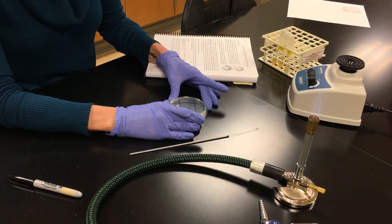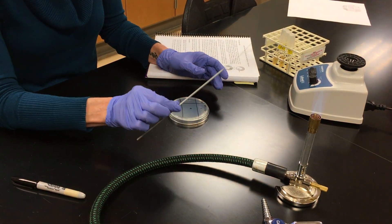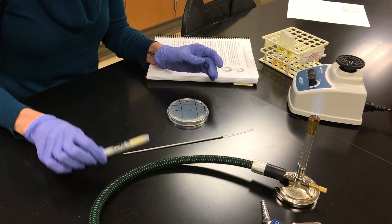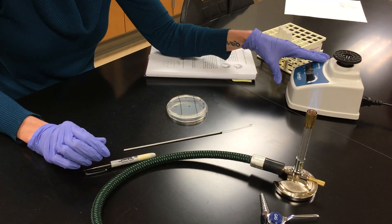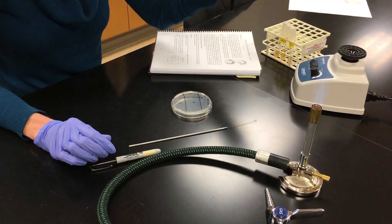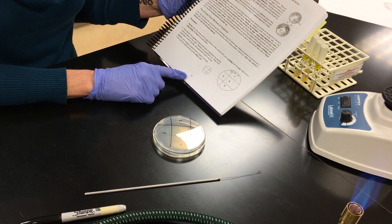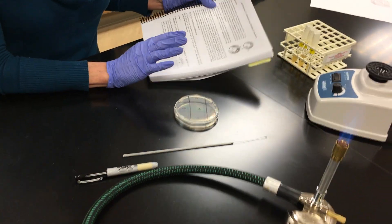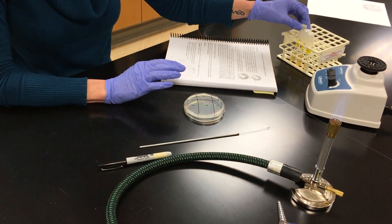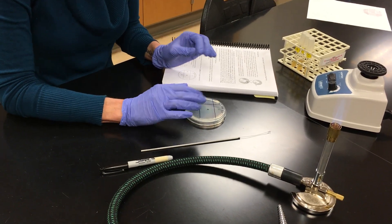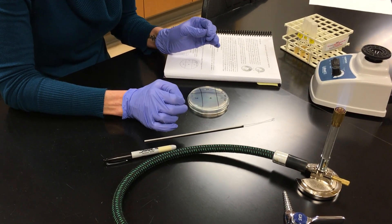You're going to get three different nutrient agar plates. You're going to need your loop, you're going to need a sharpie, and then there are three vortexes that are going to be in the back of the classroom. So we are just going to follow the directions in lab 5 on page 39, and what we're trying to do is we are going to take these mixed cultures, we're trying to isolate individual colonies and create a pure culture.